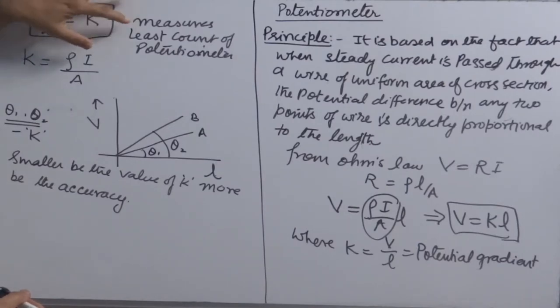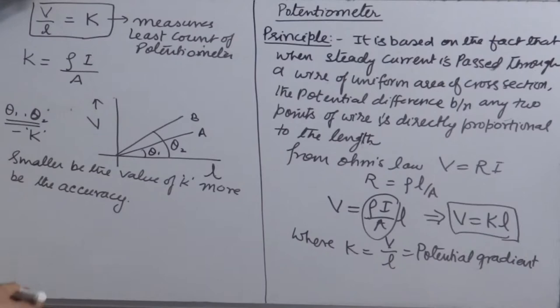But it measures the least count of potentiometer. Least count of any instrument, especially potentiometer, we can see is measured by K. And we know that least count for any instrument is very important factor to know. The value of K, as I told you, is here.